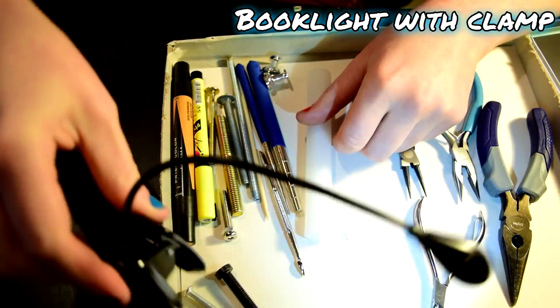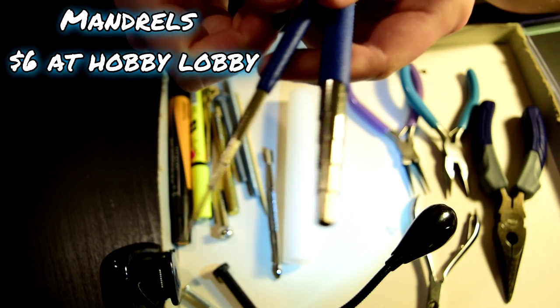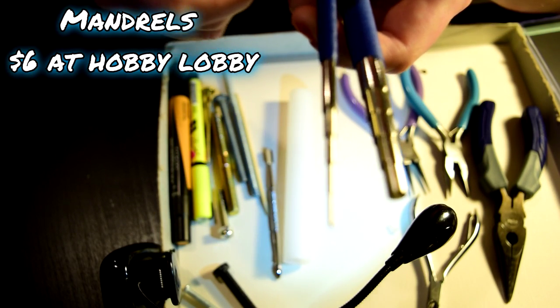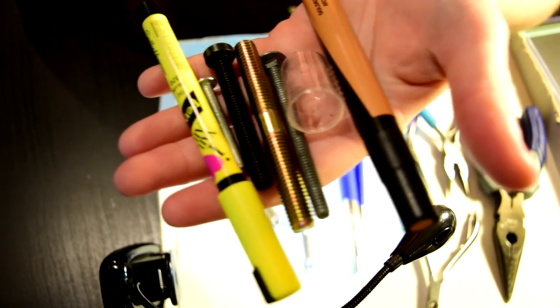A book light with a clamp. Mandrills for shaping the round pieces. If you don't have those, of course, you could use various round objects like screws, pens, markers.